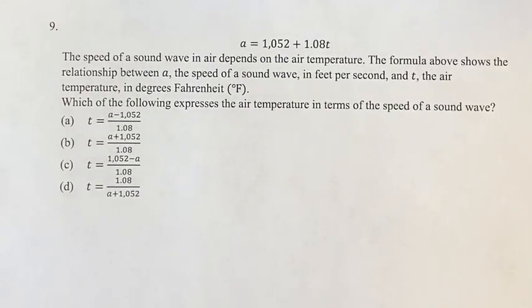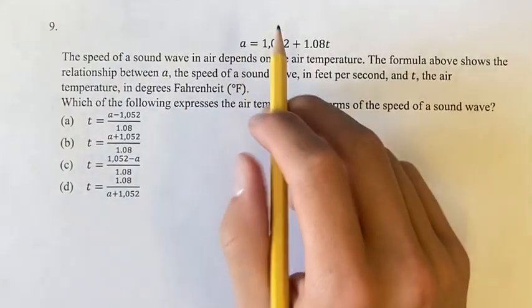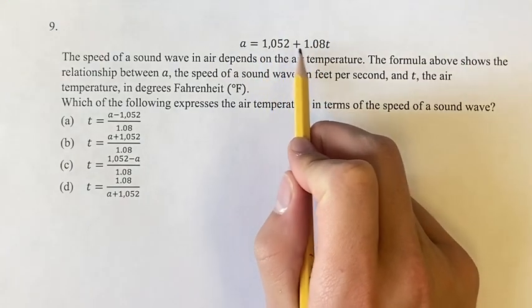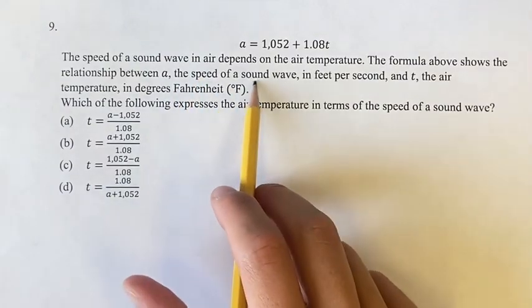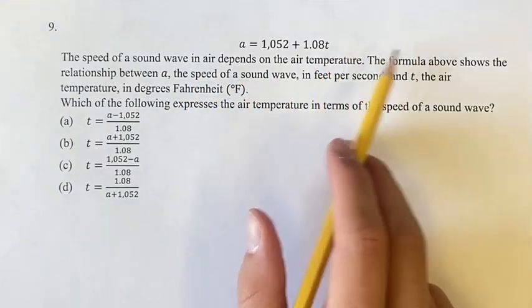Hello and welcome back to our video. This problem, we're given the equation A is equal to 1052 plus 1.08T, where A is measuring the speed of a sound wave, and it's in terms of T, which is the air temperature.